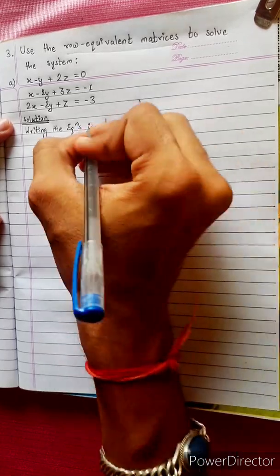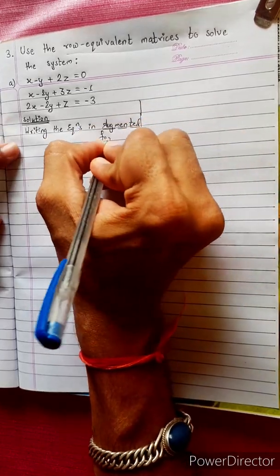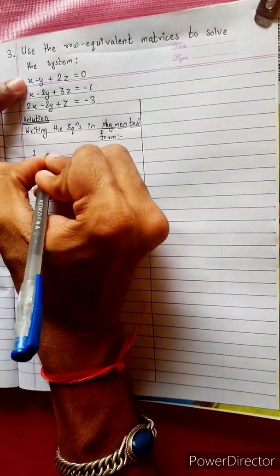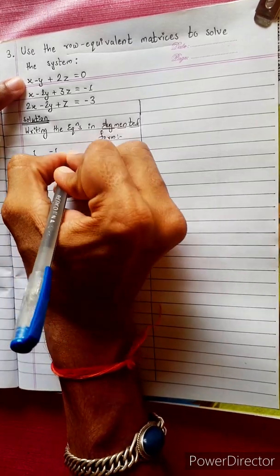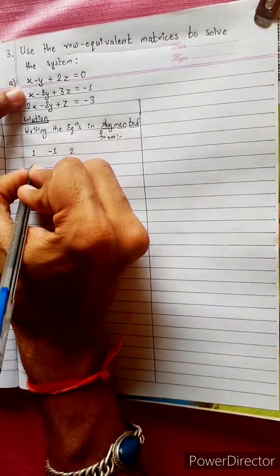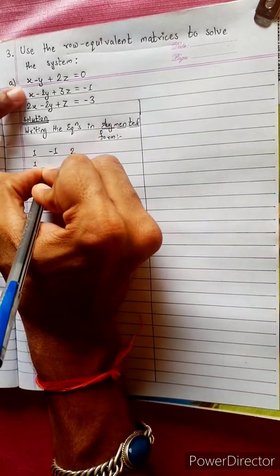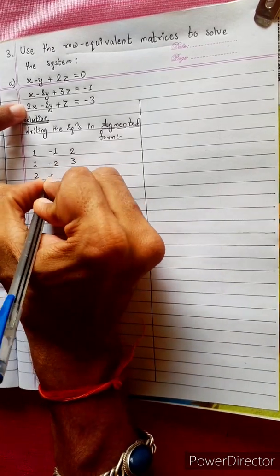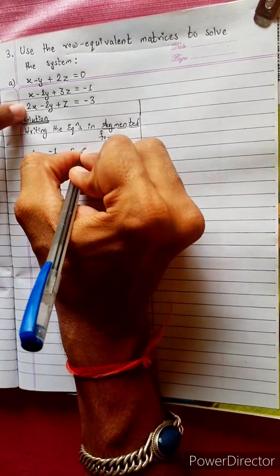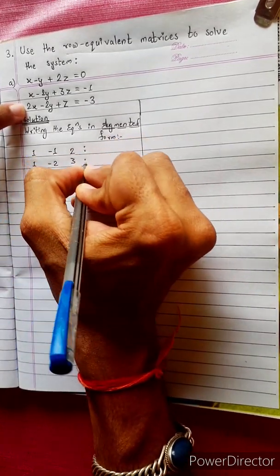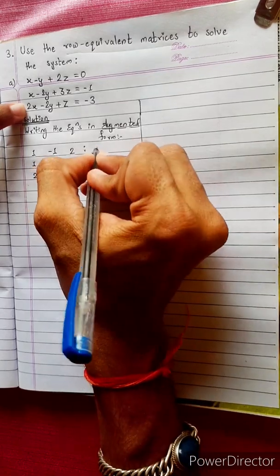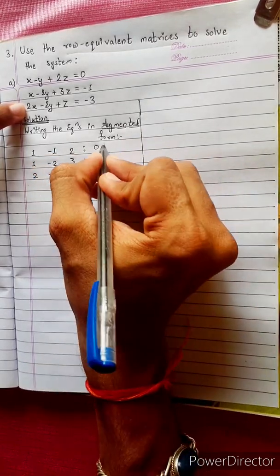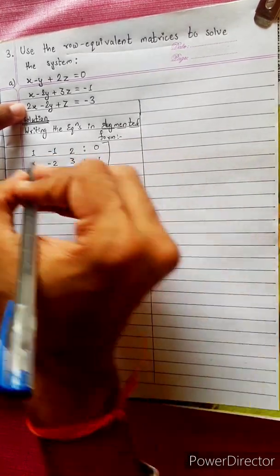Augmented form — how do you understand the equation? The coefficients are: 1, -1, 2, 1, -2, 3, 2, -2, 1. The right-hand side values are 2, 0, -1, -3. This is the augmented form.